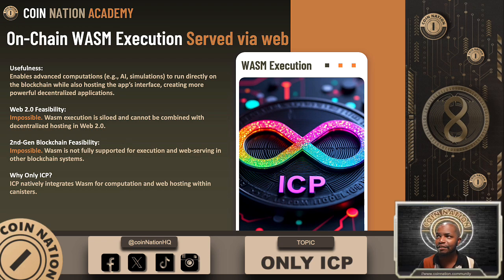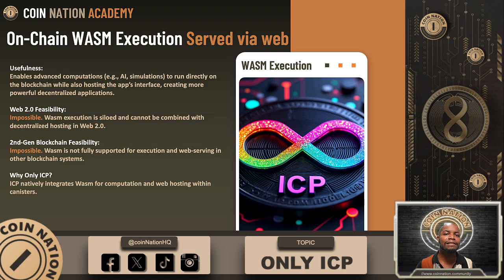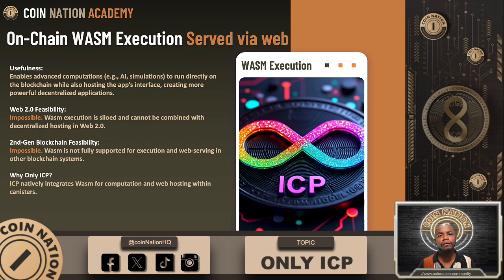On-chain WASM execution served via the web. Advanced apps like simulations or AI tools need powerful computations and seamless user interfaces. ICP runs these apps entirely on-chain using WebAssembly (WASM), while also serving the front end directly. Other blockchains execute some logic but can't host front ends or run WebAssembly natively. In Web2, platforms separate computation, storage, and hosting, making the process inefficient. ICP's canister model unifies all of this, allowing for powerful apps that run and serve entirely from the blockchain.